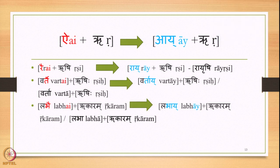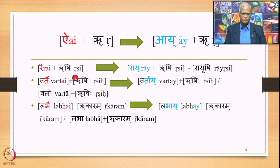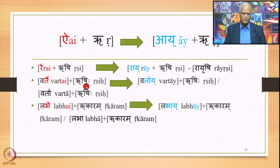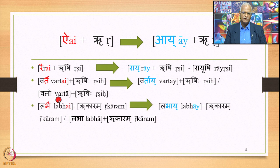Next, Ay plus Ri: input Ay plus Ri, 6178 applies and output is Aaya plus Ri. So Rai plus Rishi as a compound — Ay is substituted by Aaya, giving Raya plus Rishi, that is Raya-Rishi. Similarly, Vartai plus Rishi, Sandhi between two Padhas: Ay is substituted by Aaya, giving Vartaiya plus Rishi, and optionally Y is deleted, giving Vartai plus Rishi.